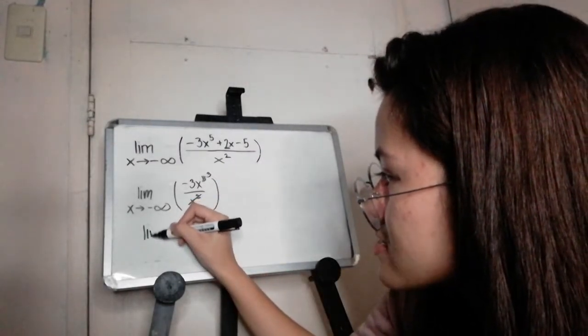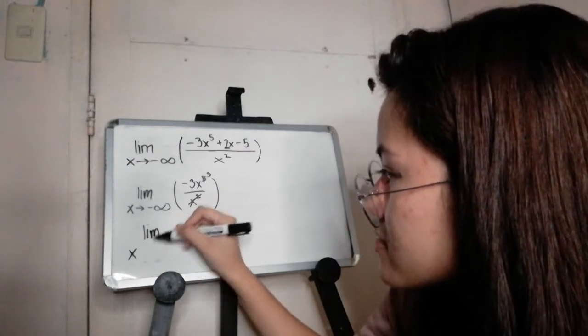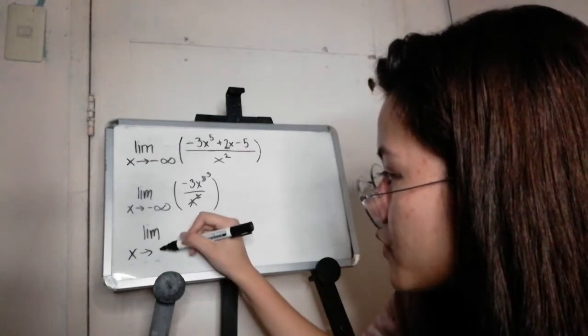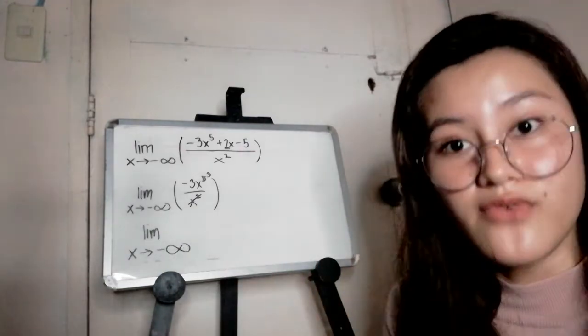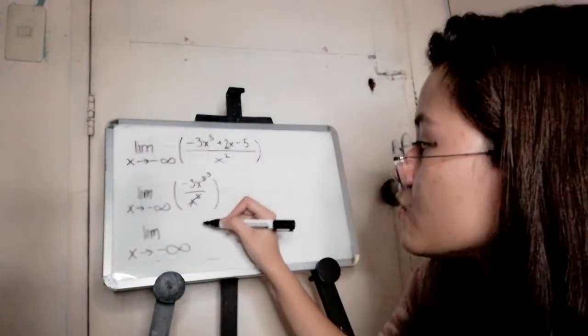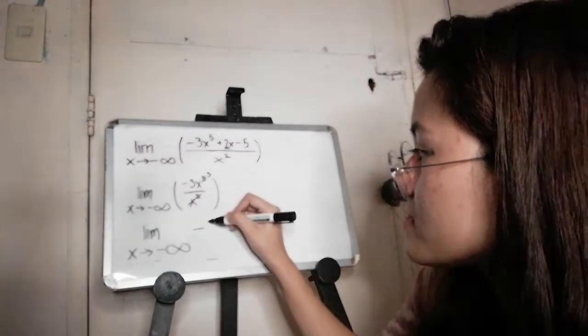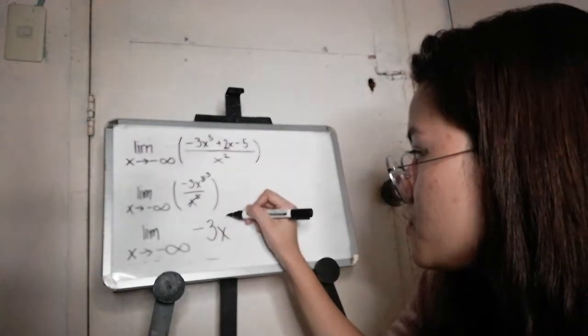We come up with this problem now. The limit of x as it approaches negative infinity of the function, which is negative 3x cubed.